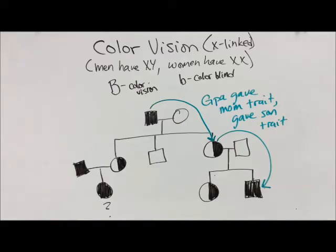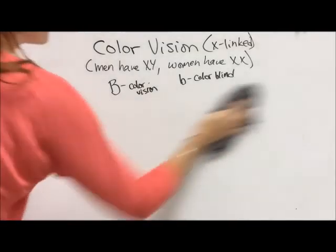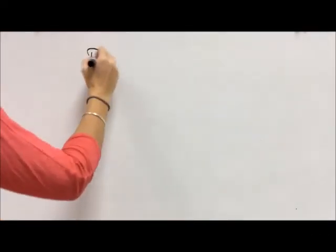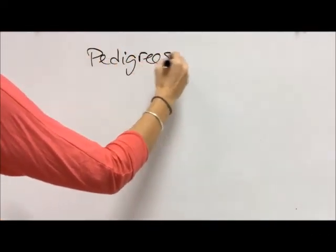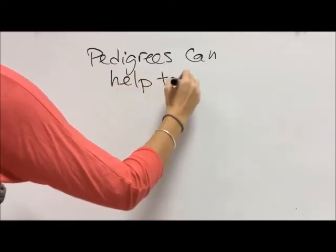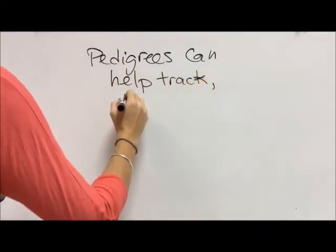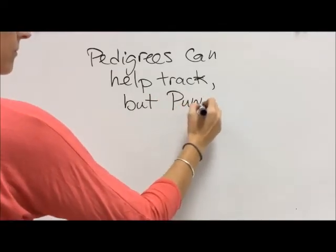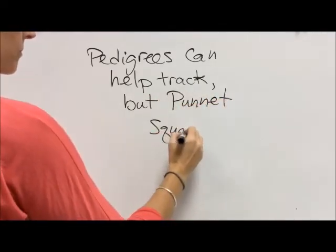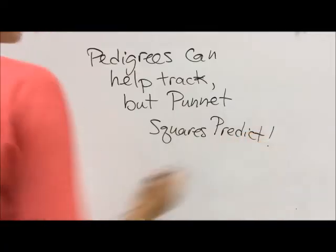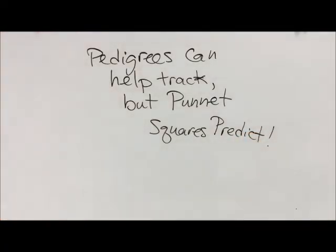Pedigrees help us track traits and make sense of how we inherited certain traits in our family. The next thing we need to learn about are Punnett squares, which help us predict our inheritance.